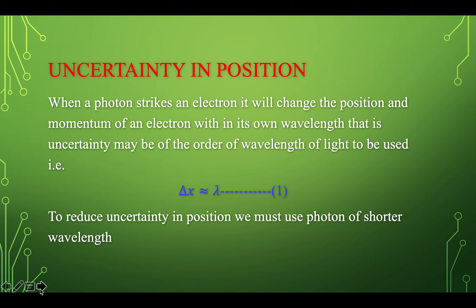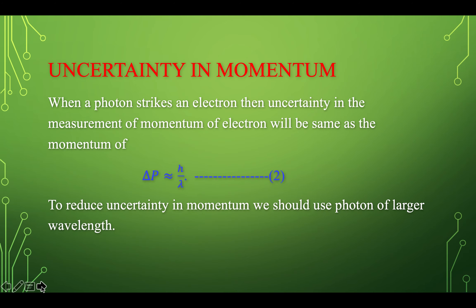To reduce uncertainty in position, we must use a photon of shorter wavelength. When a photon strikes an electron, the uncertainty in the measurement of momentum of the electron will be the same as the momentum of the photon, which is delta P approximately equal to h over lambda. So when we use shorter wavelength, uncertainty in momentum increases.